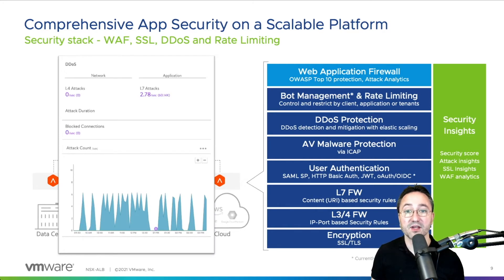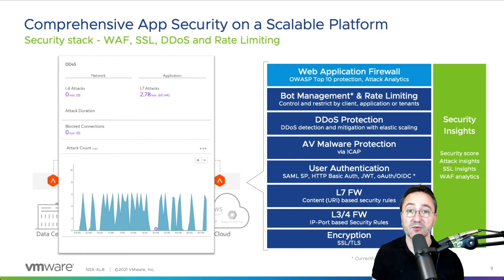On all layers of the incoming traffic, the NSX Advanced Load Balancer is always monitoring for DDoS attacks. Over 30 different types of attacks can be identified, and when that happens, the system will start mitigation automatically.